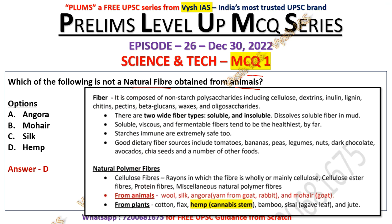The answer is hemp. All the options are natural fibers, but the question specifically asks about fibers obtained from animals. From plants we get hemp, cotton, flax, and bamboo — these are natural but plant-based. From animals we get wool, silk, angora (from rabbit), and mohair (from goat).